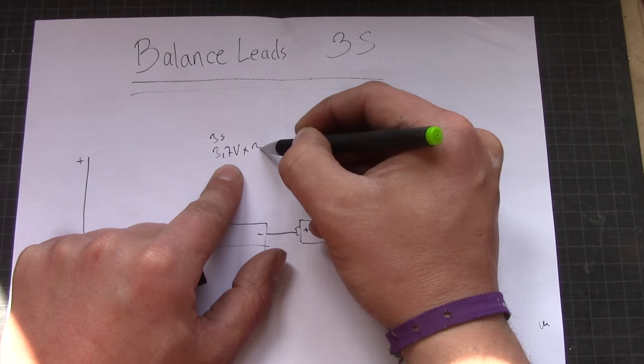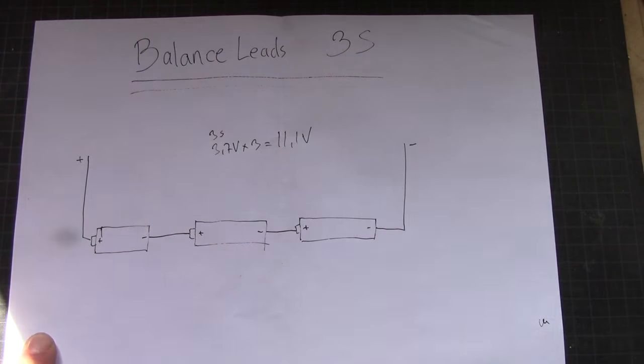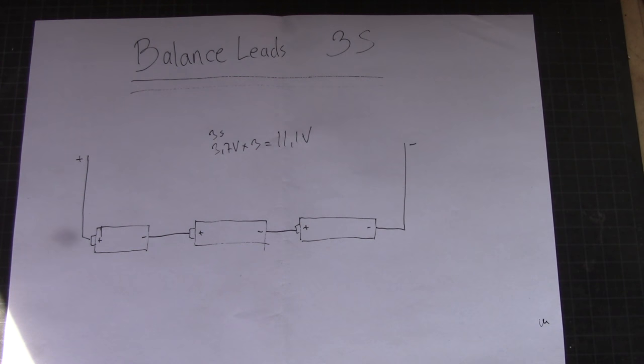Between here we have 3S, or 3.7 volts times 3, that would equal 11.1 volts. What we're going to do when we are hooking it up to a balance lead, first of all you need to understand what a balance lead in question is.